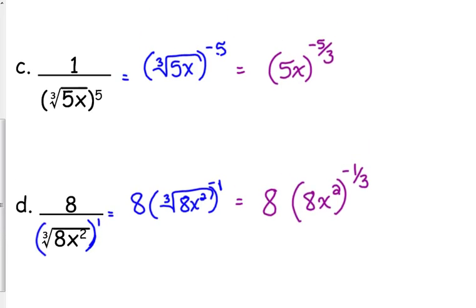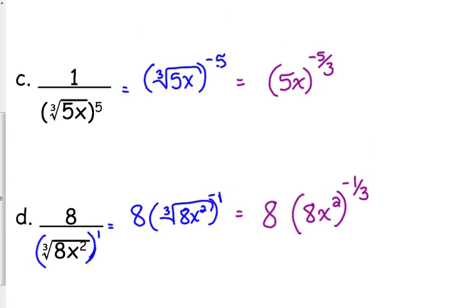That is all we can do — well, not all we can do, but you cannot multiply those 8s because this 8 has an exponent, and exponents come before multiplication. We could simplify the cube root of 8 right here in this step — we're going to get to simplifying in a minute. I just wanted to point out that we could simplify the cube root of 8, which would give us 2, but the X squared would still be in there.